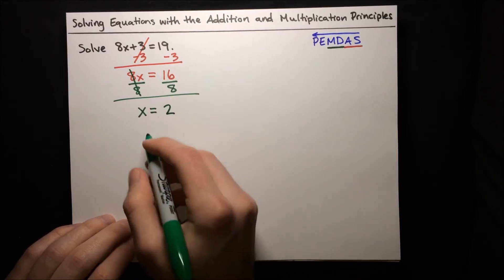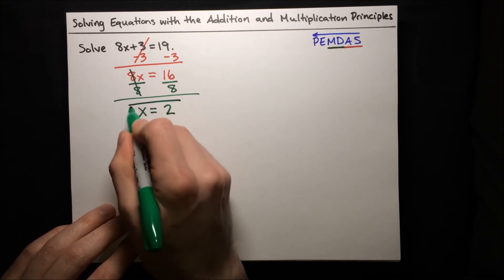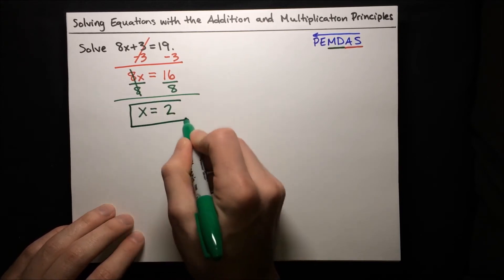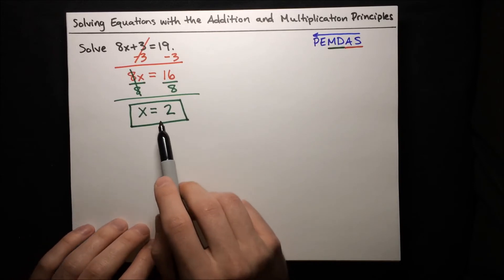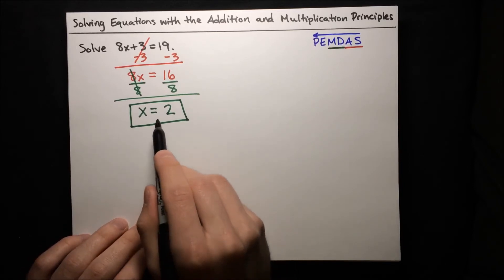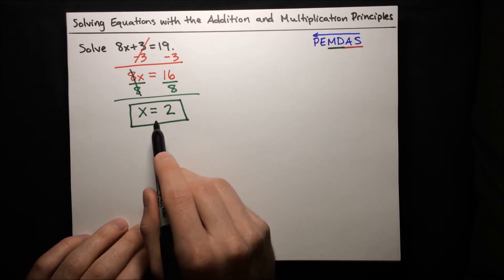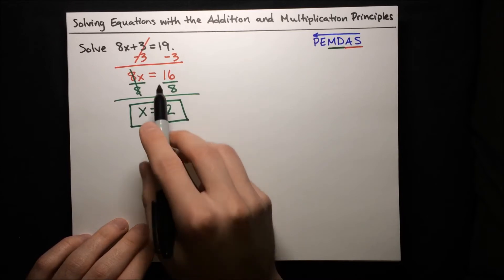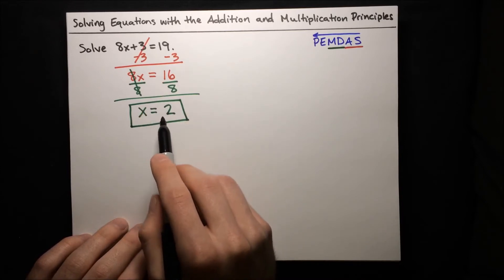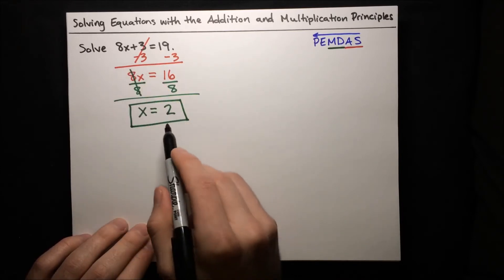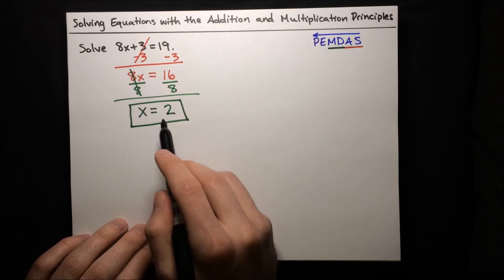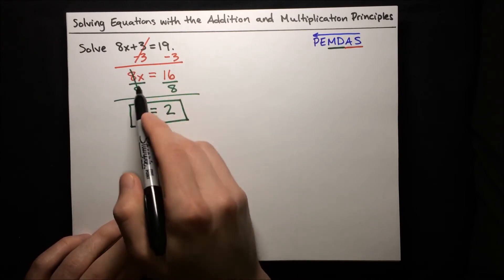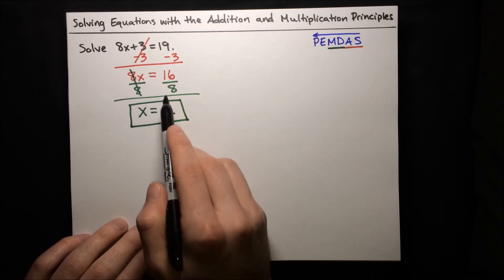And there we have it — that's our solution to the equation. Now, although we're finished and we found the solution, it's good practice to check that our solution is indeed right. If this is indeed our solution, then it should satisfy this equation. When we plug it in for x, it should result in a true statement. If not, then we know we made a mistake somewhere along the way.